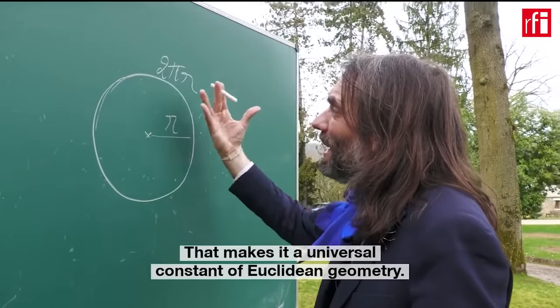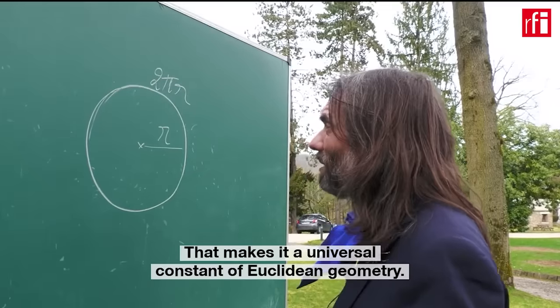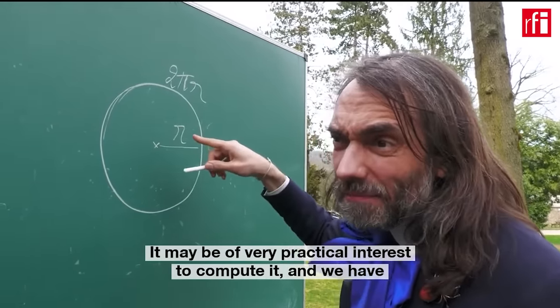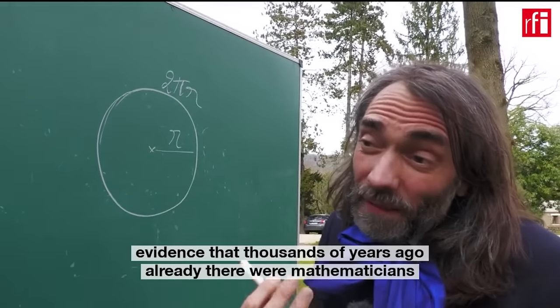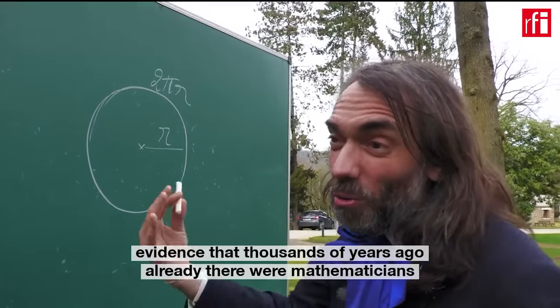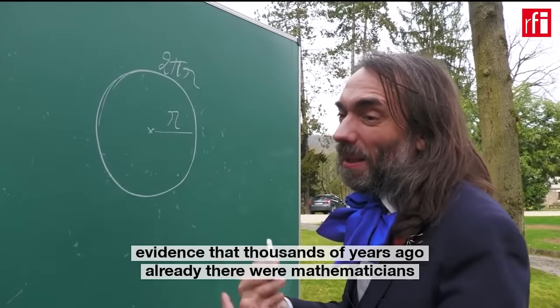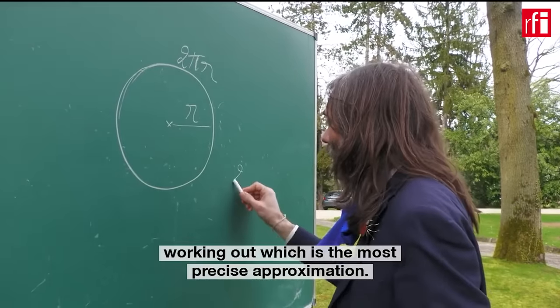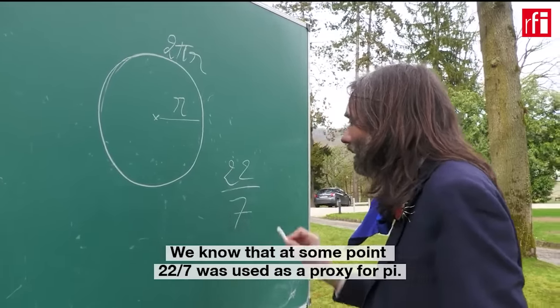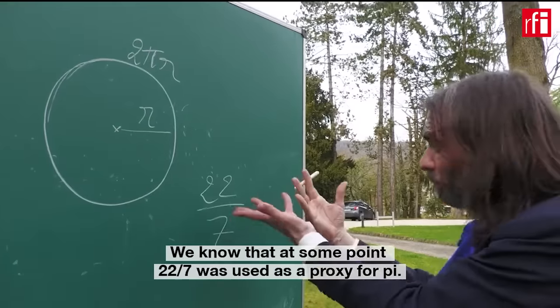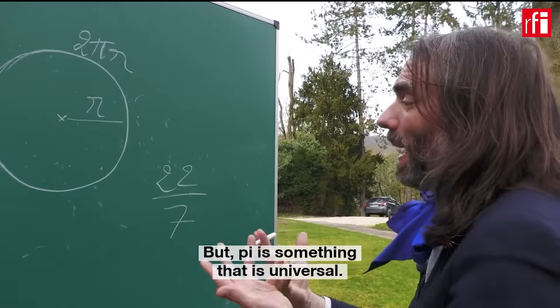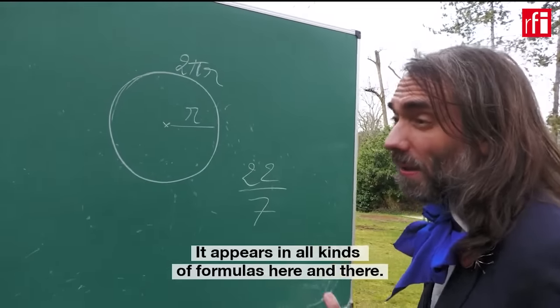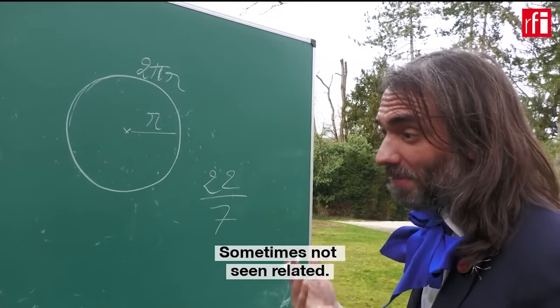And that makes it a universal constant of Euclidean geometry. It may be of very practical interest to compute it, and we have evidence that thousands of years ago mathematicians were working out the most precise approximation. We know that at some point 22 over 7 was used as a proxy for Pi. But Pi is something that is universal. It appears in all kinds of formulas here and there, sometimes not seemingly related.